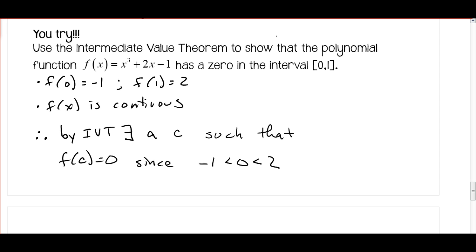Alright, so here's the solution to this problem. Again, first step is to check the endpoints of our interval. Notice we've got the value of the function at 0 is -1, the value of the function at 1 is 2. We know the function is continuous because it's a polynomial. Therefore, by the Intermediate Value Theorem, there exists a value c such that f(c) equals 0, since 0 is between -1 and 2.